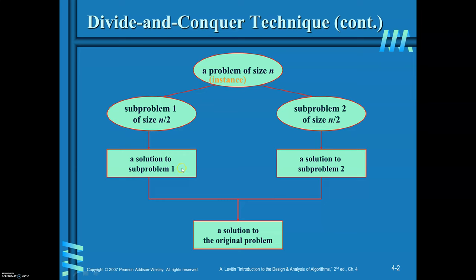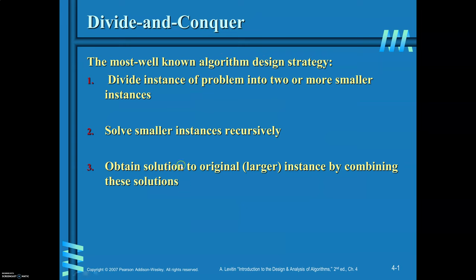Find the solution for subproblem 1 and subproblem 2, then combine the solutions of these two subproblems to get the solution for the original problem. This is the general plan for divide and conquer. The three important steps are: dividing the problem into smaller instances, solving the smaller instances recursively, and obtaining the solution for the original problem.